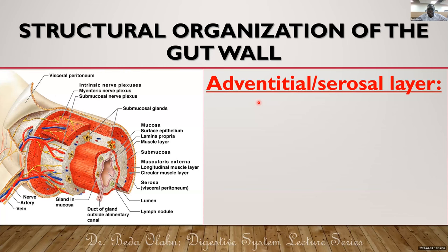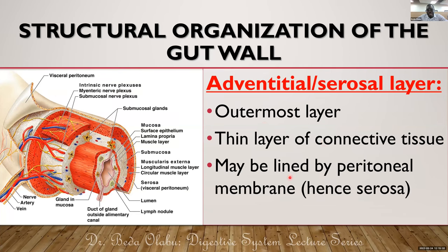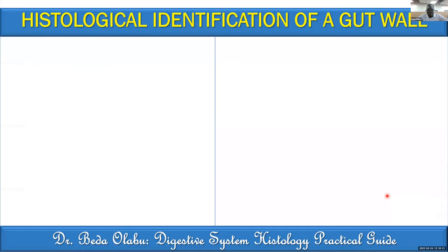The outermost layer is the adventitia, consisting of a thin connective tissue layer. If lined by peritoneum (visceral peritoneum), it is called serosa. If not lined by peritoneum, it is called adventitia. For example, most of the esophagus (in the neck and thorax) has adventitia, while the ileum, completely invested by peritoneum, has serosa.